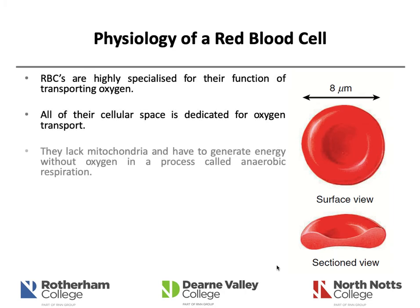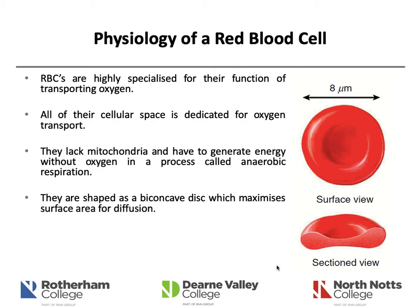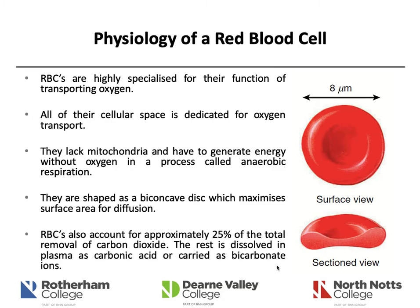Red blood cells are highly specialised for transporting oxygen, with all space dedicated to oxygen transport. They lack mitochondria and must generate energy by other means. Mitochondria generate energy through aerobic respiration using oxygen; red blood cells do it anaerobically through anaerobic respiration, which maximises their function by not utilising any oxygen they are carrying. Their biconcave disc shape also maximises surface area so they can take up more oxygen. They account for approximately 25% of the total removal of CO2, while the rest is dissolved in plasma as carbonic acid or bicarbonate ions.